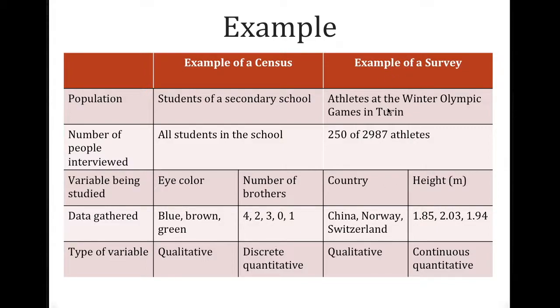On our last column here, this is an example of a survey. So we're talking about athletes at the Winter Olympic Games. And we're only going to survey 250 of the 2,987 athletes. We're going to study their variables of countries and their heights. The countries that we have for some examples would be China, Norway, Switzerland, among all of them. And for height, we have a few different numbers as examples.